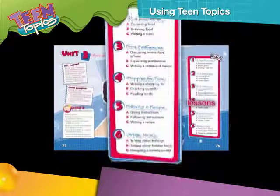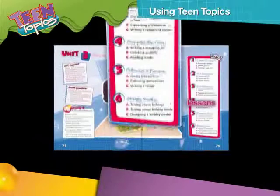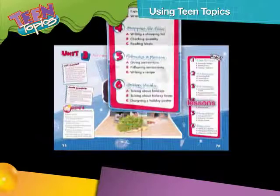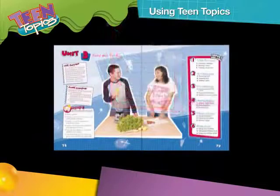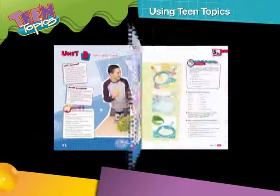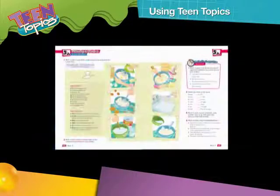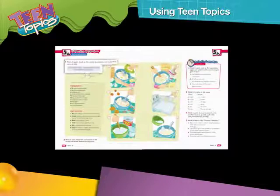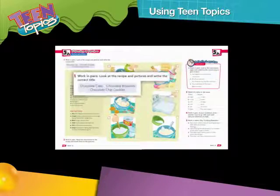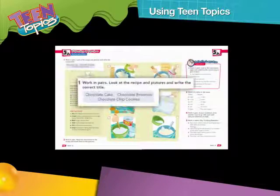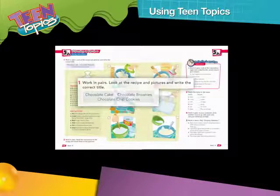Lessons also have clear and detailed instructions for every activity. Lesson A is always two pages long and usually follows the entire cycle of experiential learning. It begins with a pre-reading or pre-listening activity.